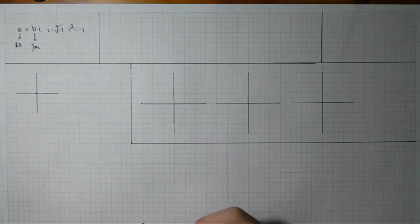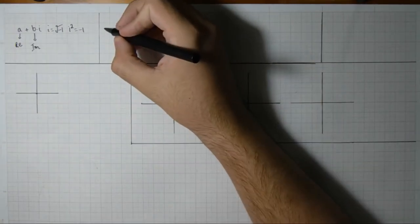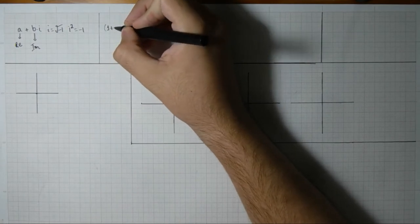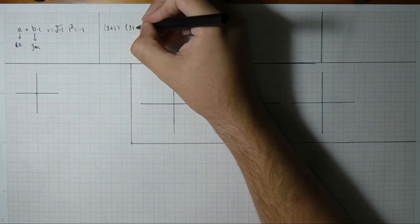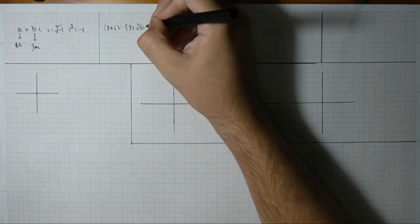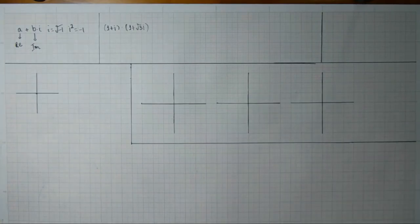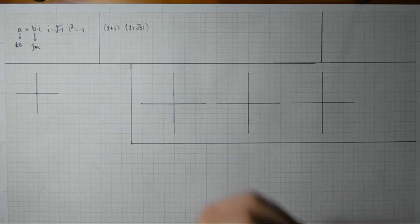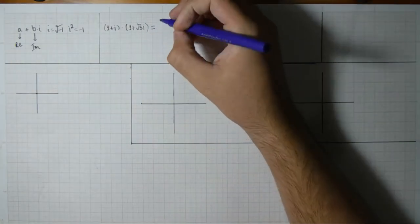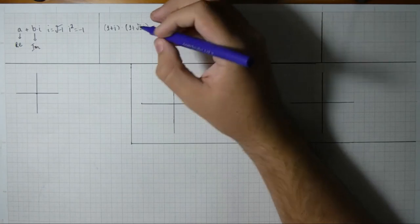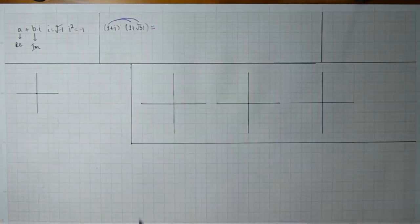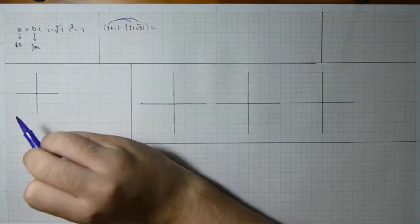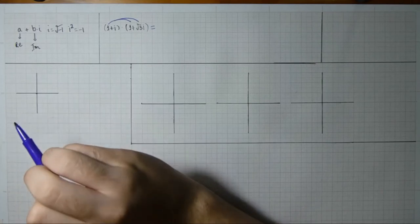How do we multiply complex numbers? Let's take an example: (1 + i) times (1 + √3·i). We just apply normal distributive rules as we would with reals. But there's one catch: i squared is equal to minus 1, and we should always treat it like that.